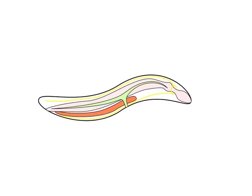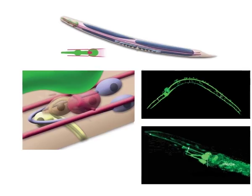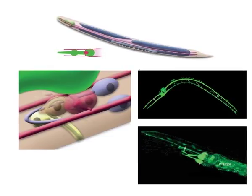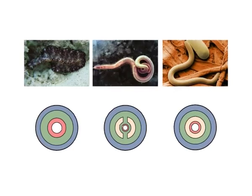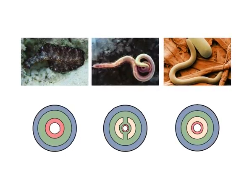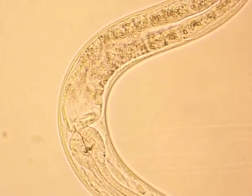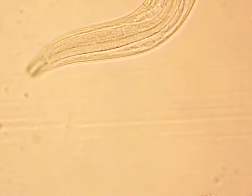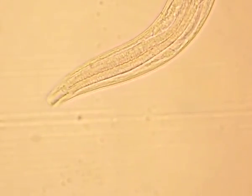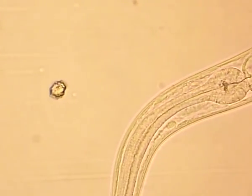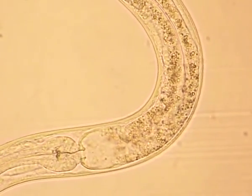The nematode pseudocoelom is a fluid-filled body cavity lying between the body wall and the digestive tract. The pseudocoelomic fluid bathes the muscles, the digestive system, the reproductive system, and some or all of the excretory system. This body cavity is referred to as pseudocoelom because it is not entirely lined by mesodermal cells, as in the true coelomic cavity of vertebrates. It comprises coelocytes which provide the hydrostatic pressure for entire body function and act as a lubricant between tissues.